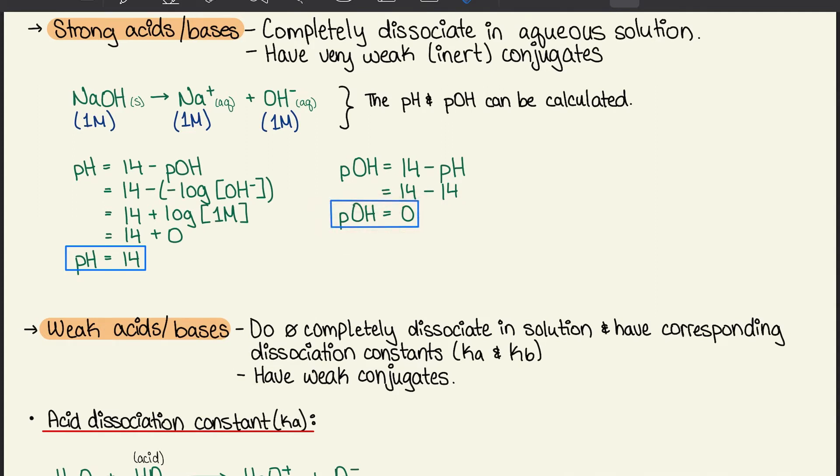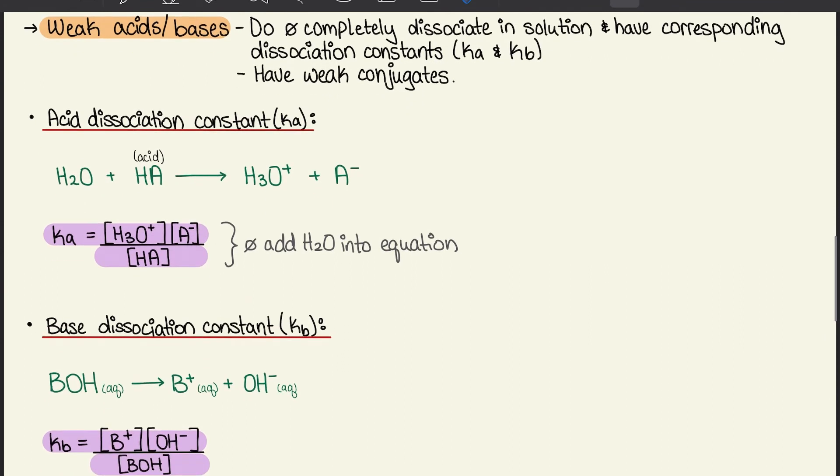For weak acids and bases, they don't completely dissociate in solutions and have corresponding dissociation constants, Ka and Kb. Ka is for your acid and Kb is for your base. They also have weak conjugates.